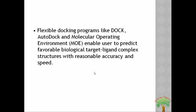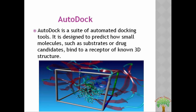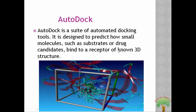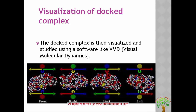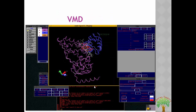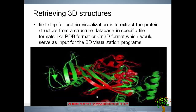The major software used for docking is AutoDock, a suite of automated docking tools designed to predict how small molecules — substrates or drug candidates — bind to a receptor whose 3D structure is already known. This is a representation of how the 3D molecule of the receptor and drug molecules bind. For visualization of the whole docking complex, VMD — Visual Molecular Dynamics — is used. This is the interface for VMD, showing the various icons and graphical user interface used for visualization and retrieving 3D structures. The first step for protein visualization is to extract the protein structure from the Protein Data Bank in PDB or CN3D format, which serves as input for 3D visualization programs.